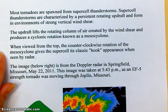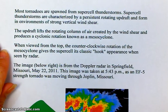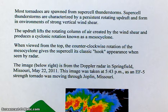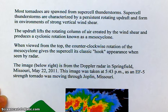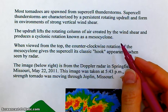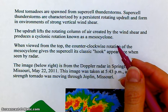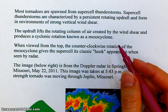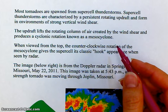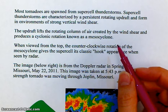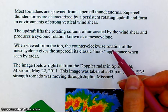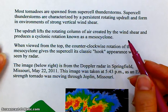Most tornadoes are spawned from supercell thunderstorms — those really big, bad thunderstorms. Supercell thunderstorms are characterized by a persistent rotating updraft and form in environments of strong vertical wind shear. Wind shear is basically when you've got wind at the ground level blowing one way, and the direction changes as you go up in the atmosphere. Maybe it's blowing from the south at the ground, then from the east a couple thousand feet up, and from the north a couple thousand feet above that.